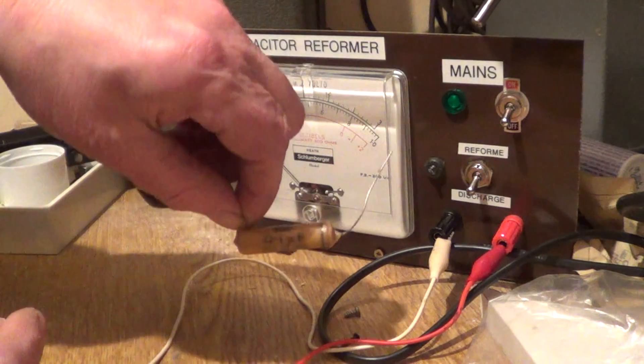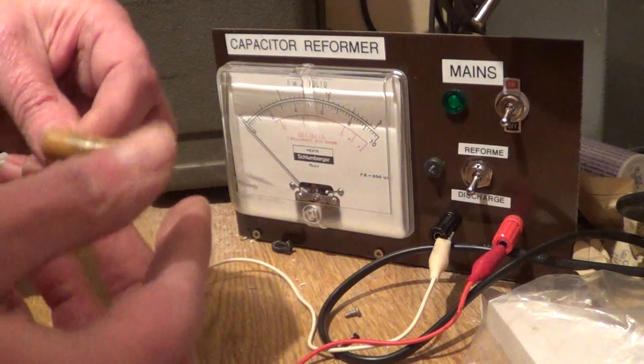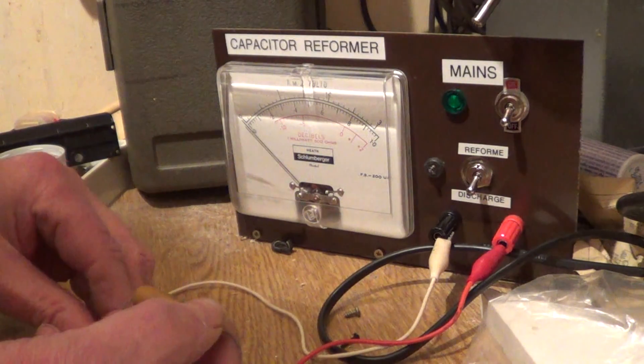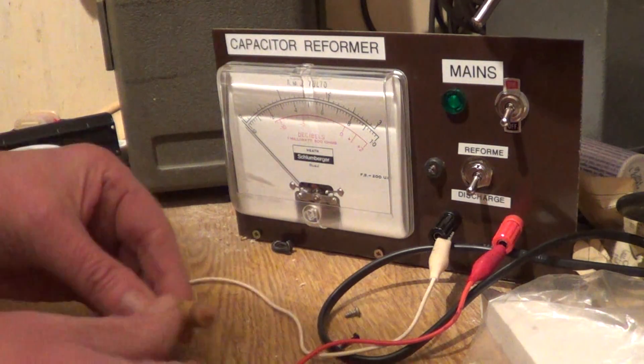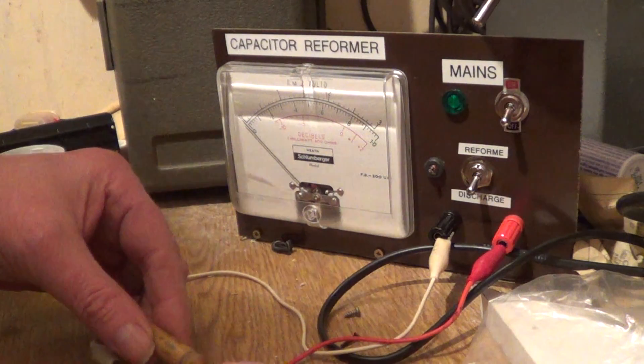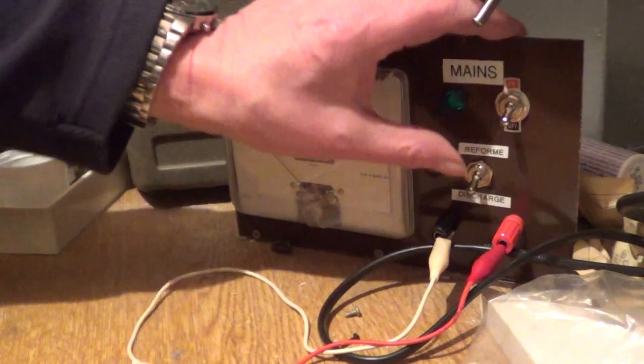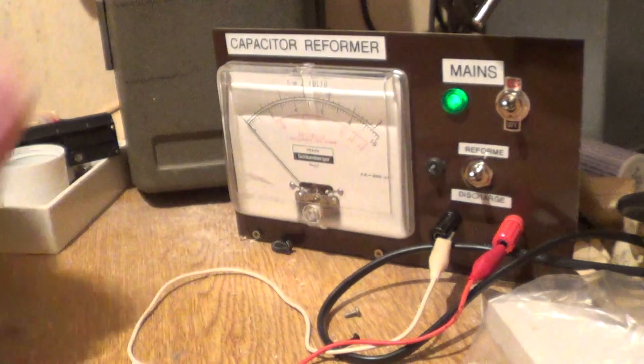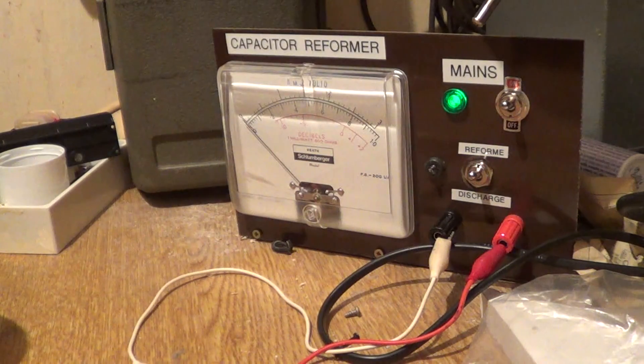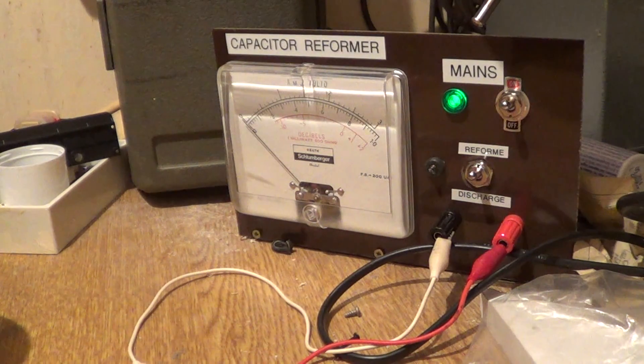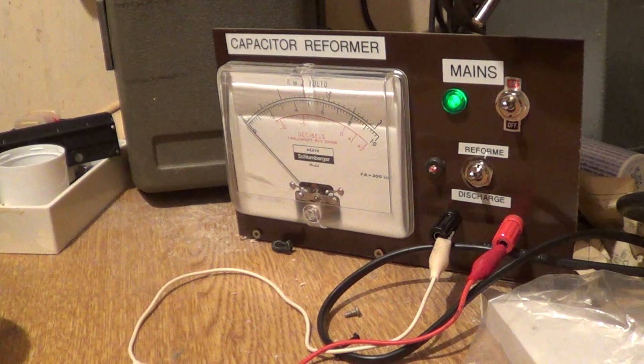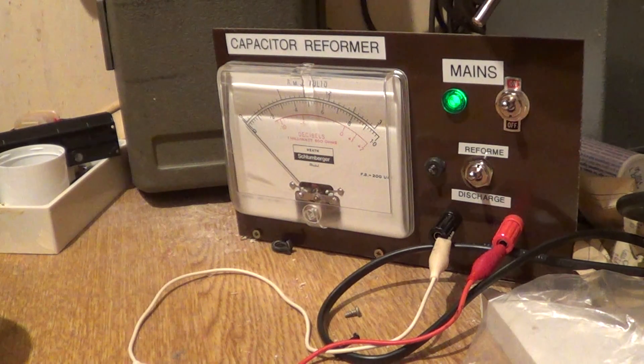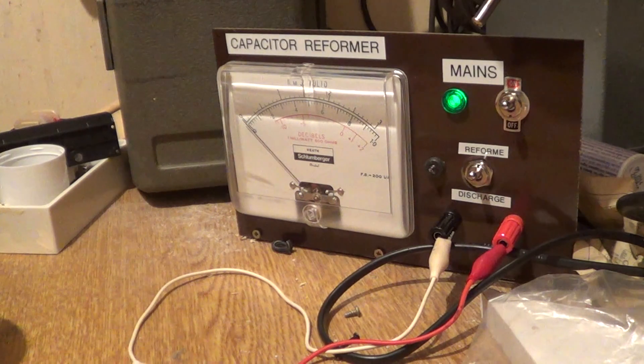0.1 microfarad. The leads can go any way round as it's not an electrolytic. Put it on to reform, and there we go. That capacitor looks all right.